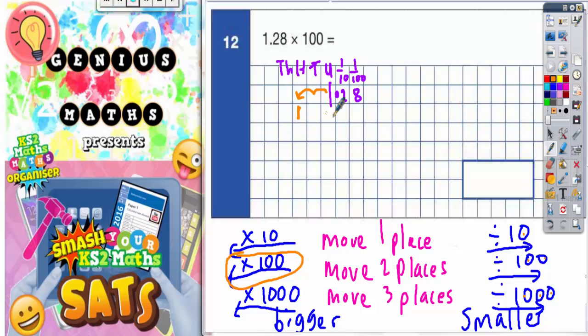The one's going to go to the hundreds column, and the two and the eight are just going to follow after the one. So the two and the eight are going to go there, and your decimal point is going to still be lined up.